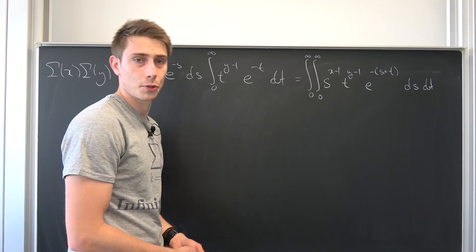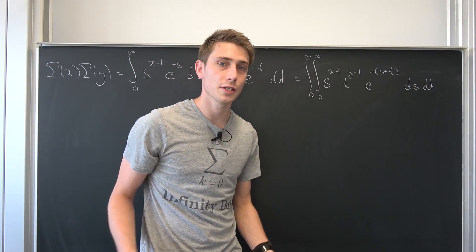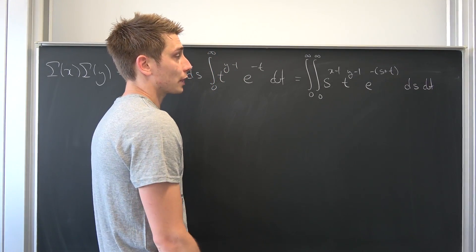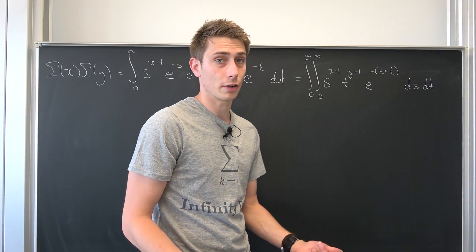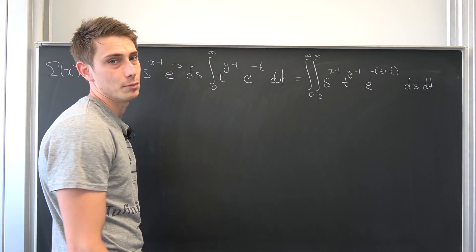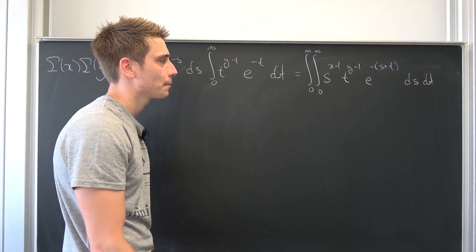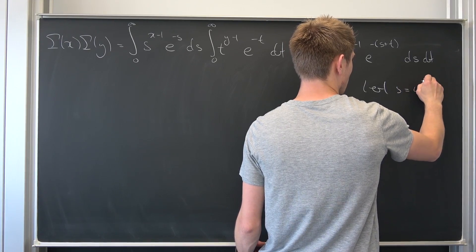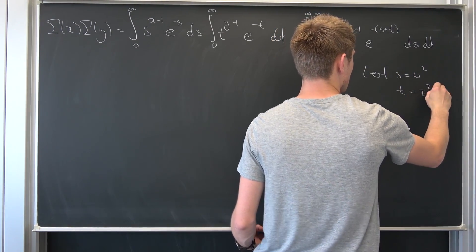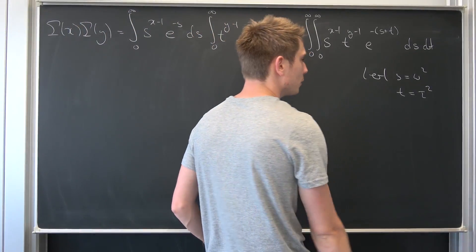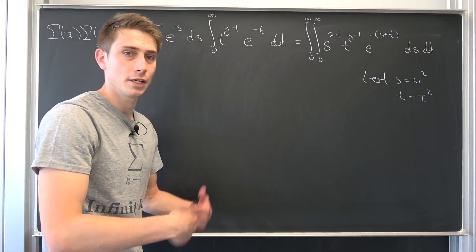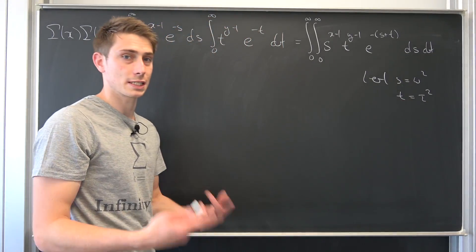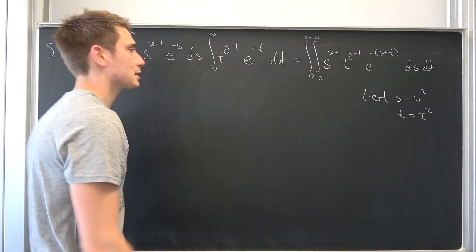I'm not going to go through the whole Jacobian determinant stuff — you can take a look at Dr. Payam's introduction to polar coordinates for that. First, I would like to make this stuff squared, for reasons that will become apparent. So let's make a change of variable: let s = ω², t = τ². Differentiating gives ds = 2ω dω and dt = 2τ dτ. We plug all of this into our integral.